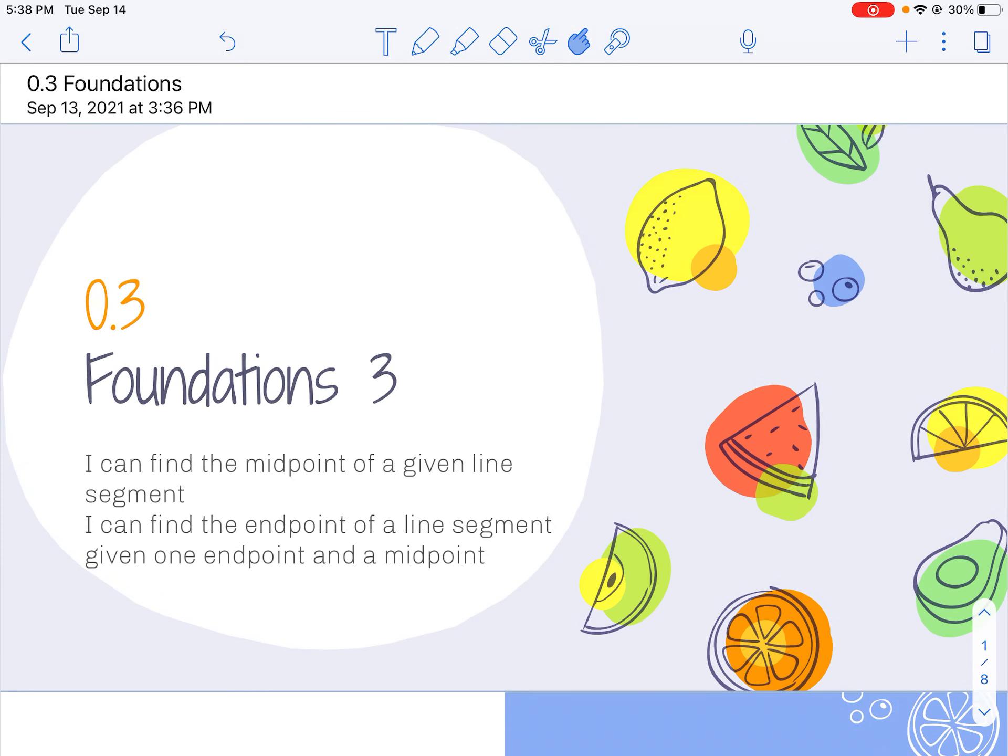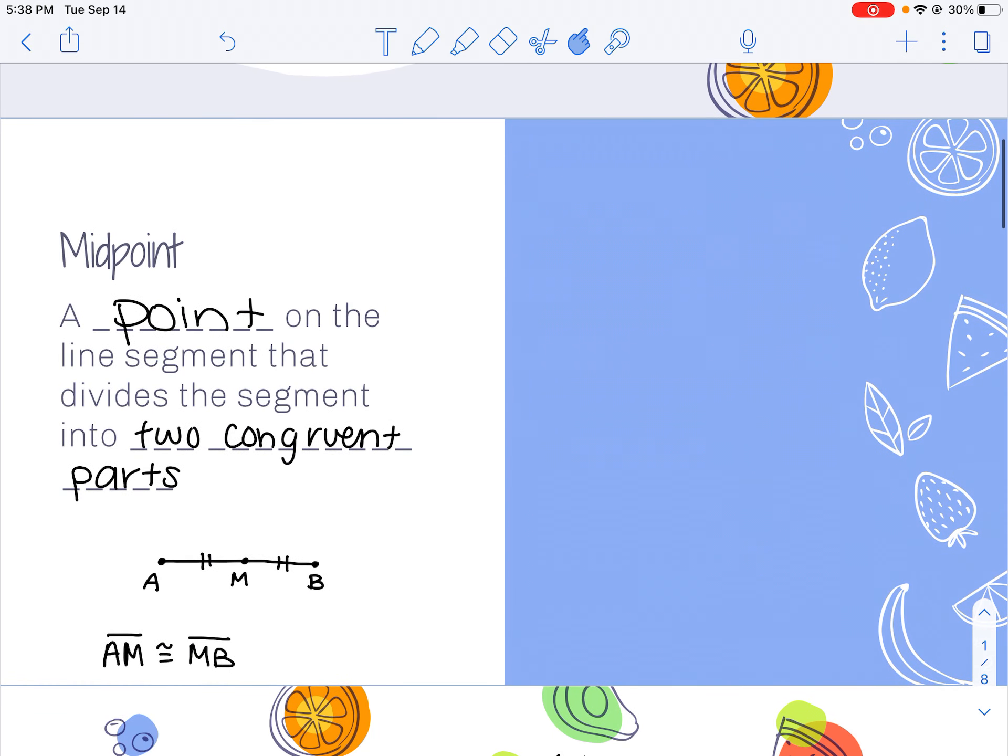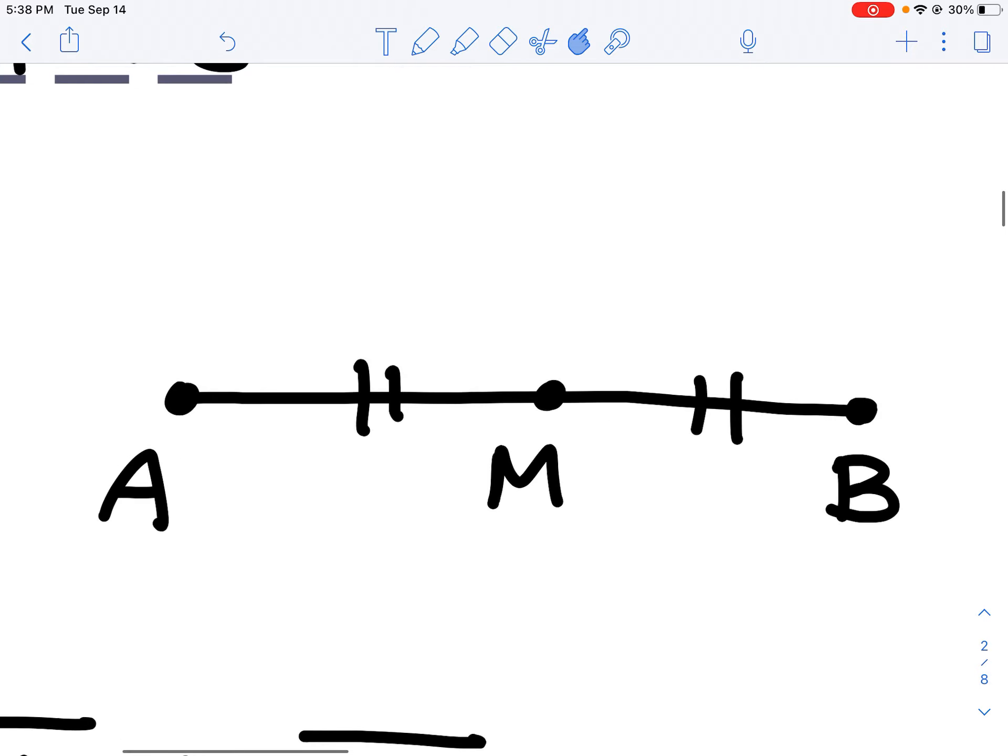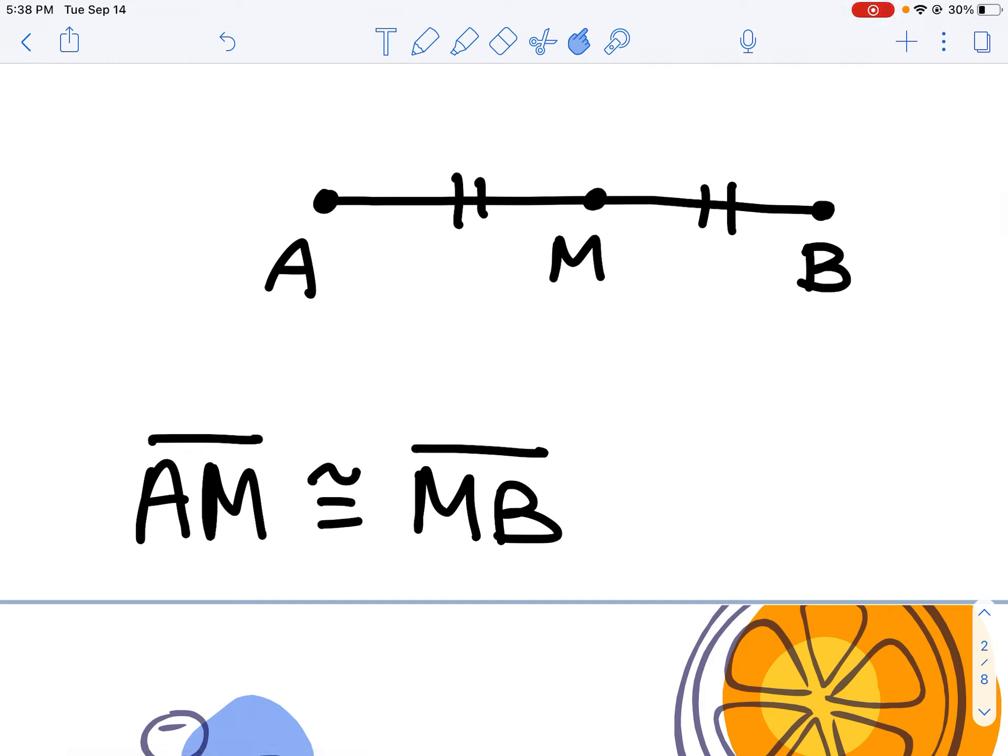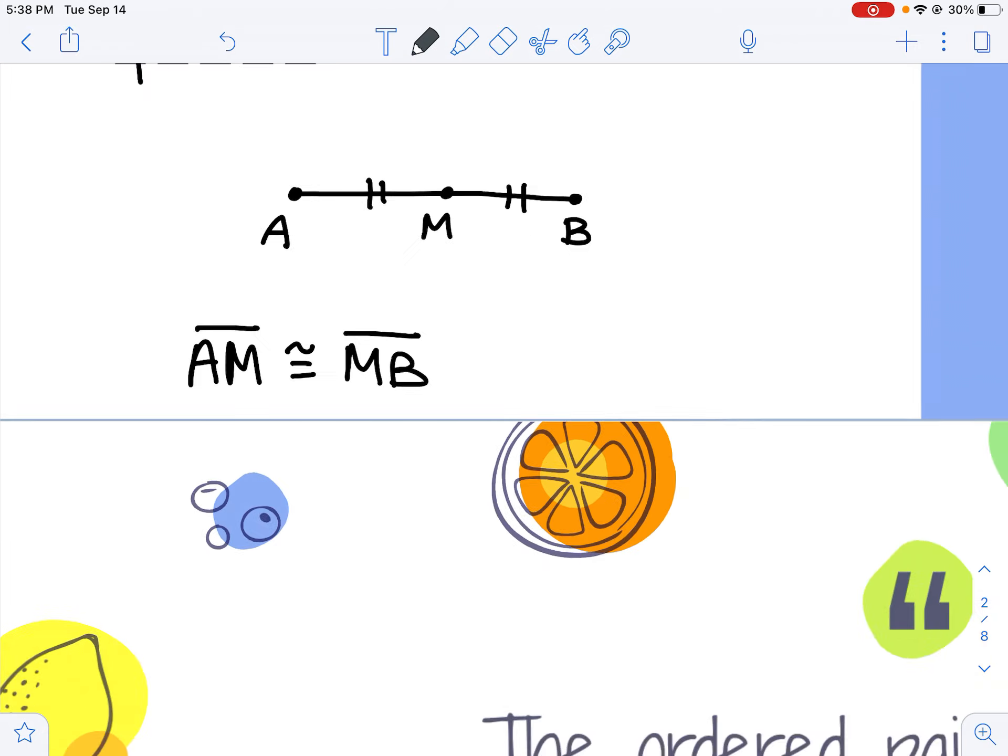On 0.3 we're talking about midpoints. Recall that a midpoint is just a point on the line segment that divides the segment into two congruent parts. I mark them congruent with those little vertical tick marks and I can write AM congruent to MB to talk about them in a written format.